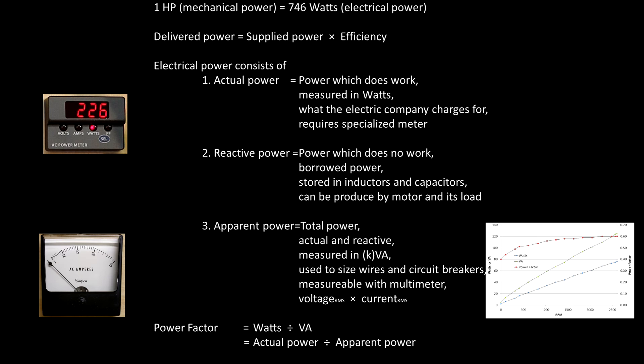Electrical power can be divided into actual, apparent, and reactive power. Actual power is what the electrical company charges for and, over time, measures the work done. Actual power is measured in watts. Reactive power is power that does no work. It is power borrowed from the electric company to charge the electric motor's coils and is later returned.